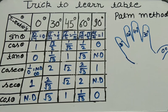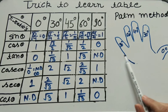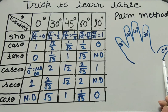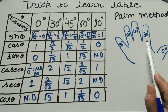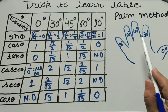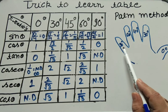Next is the Palm method. In the Palm method, we have five fingers. In the thumb area we write 0 degrees, then moving to 30 degrees, 45 degrees, 60 degrees and 90 degrees.